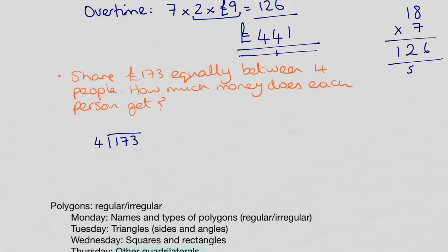So 4 into 1 doesn't go. 4 into 17 goes 4 times with 1 left over because 4, 4 is 16. 4 into 13 goes 3 times. 3, 4 is 12. So we've got 1 left over. But look, we've got nothing to carry it on to.